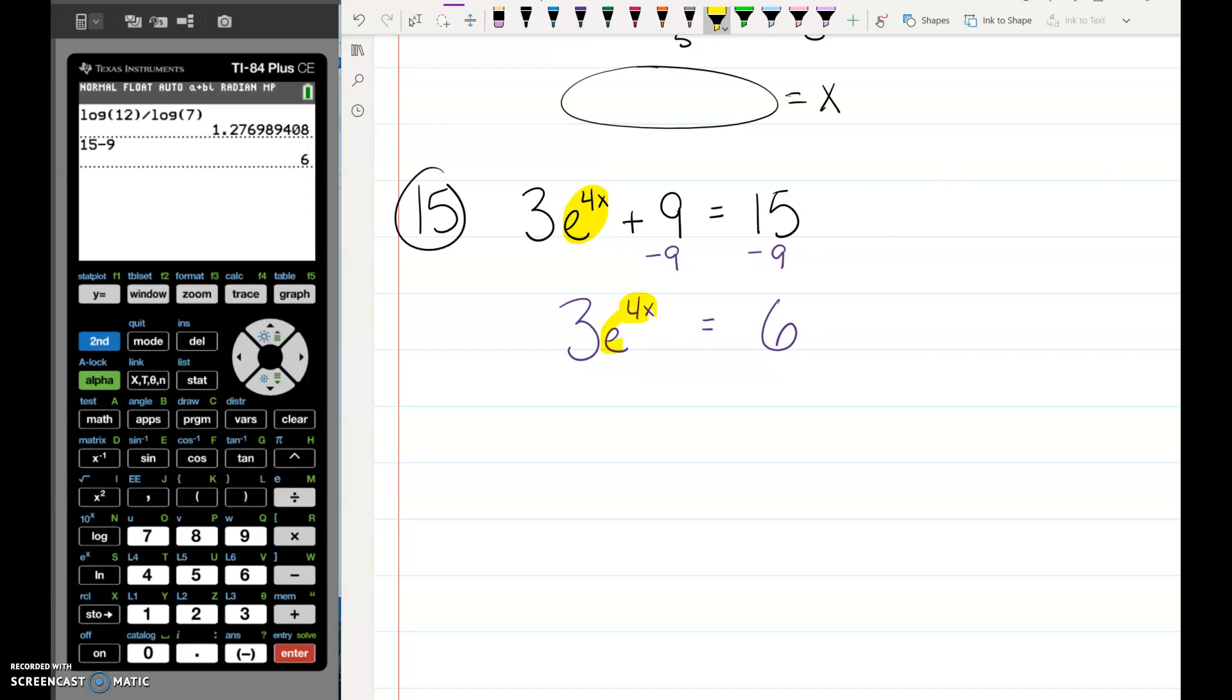We still don't have this term that has the exponent by itself. It's not 3e to the 4x. It's 3 times e to the 4x. So get rid of that 3 by dividing both sides by 3. So now we have e to the 4x equals 2.